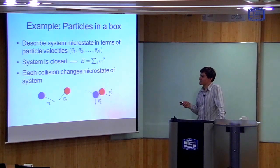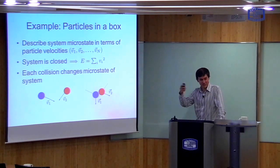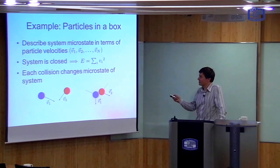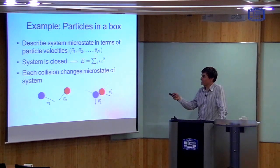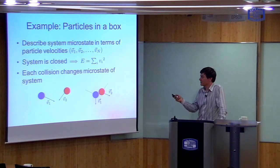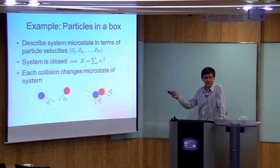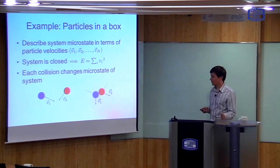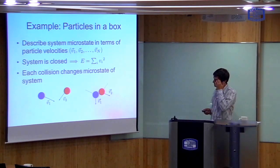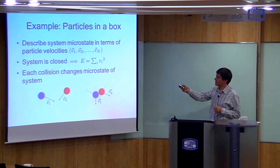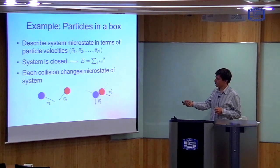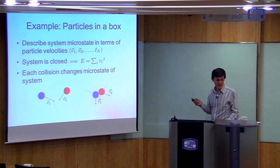If we assume this system is closed — meaning no energy or momentum is transferred in or out — then the total kinetic energy must be a constant. Kinetic energy is one-half mv squared. You can ignore m if it's a constant, so that quantity must be a constant. But if you look at the animation I showed on the previous slide, you see that the microstate is changing.